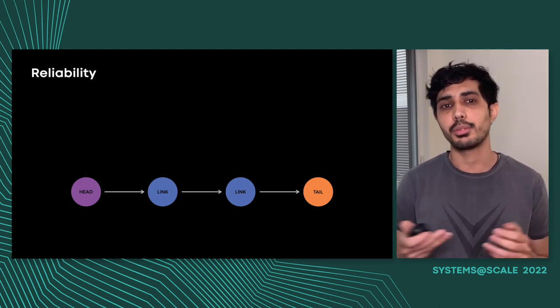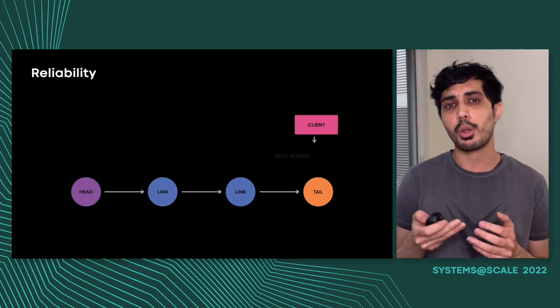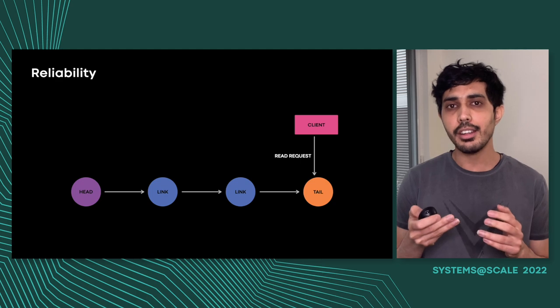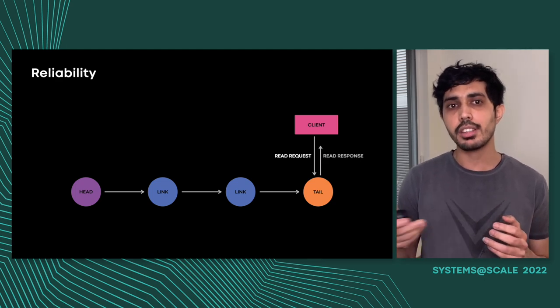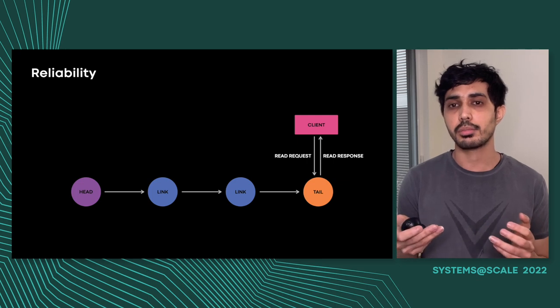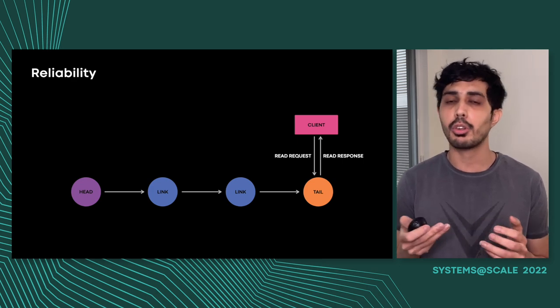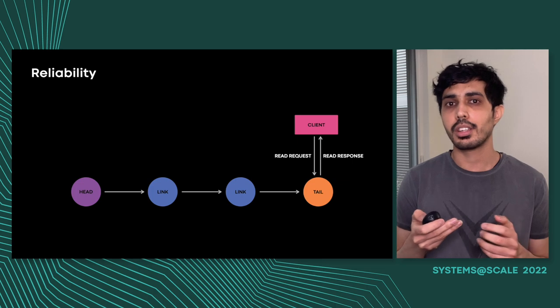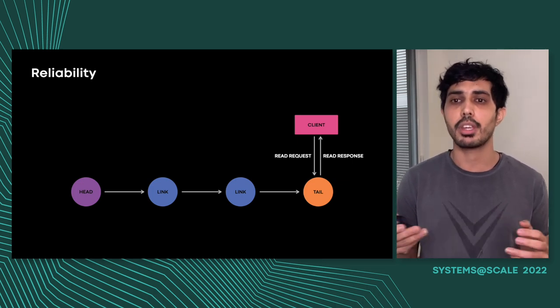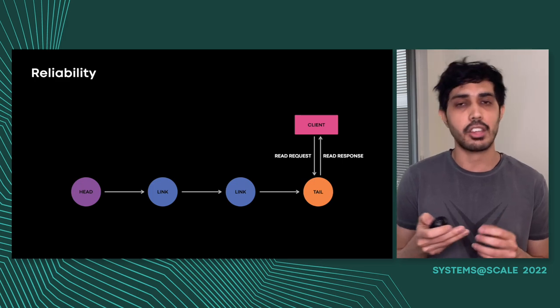Let's talk about reads now. In the initial implementation, all reads are processed by the tail of the chain. Since a write request is only marked successful when all links in the chain have processed it, this guarantees that any objects read from the tail are already present on all links in the chain. This way, we ensure strongly consistent reads. Again, this is in contrast to how reads work in quorum-based replication systems, where reads could be eventually consistent, as described by Bingbing in a previous slide. It must be pretty clear at this point that the tail would become a hotspot, as it's the only node serving all the reads while also serving writes. We'll get back to this and talk about how we can optimize the reads at a later stage in the presentation.